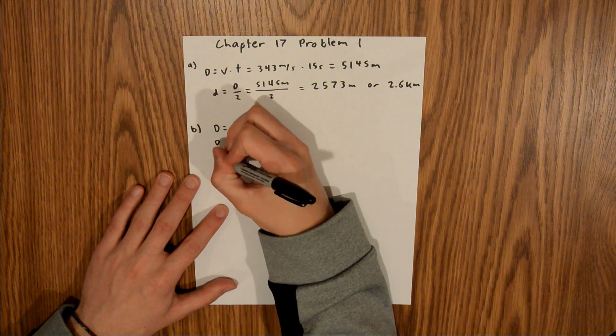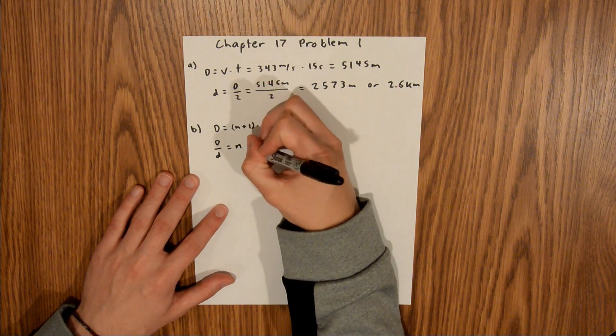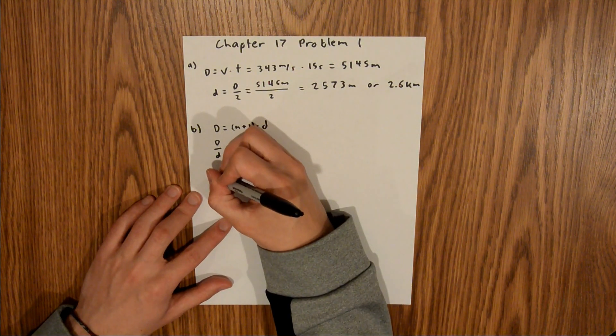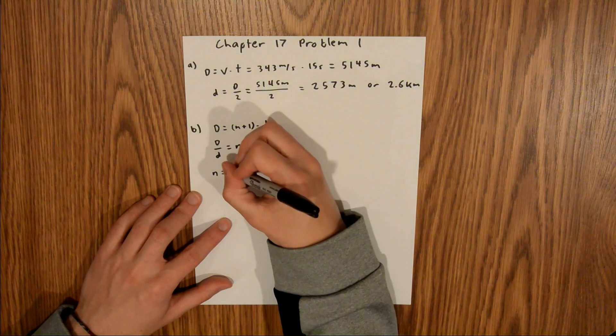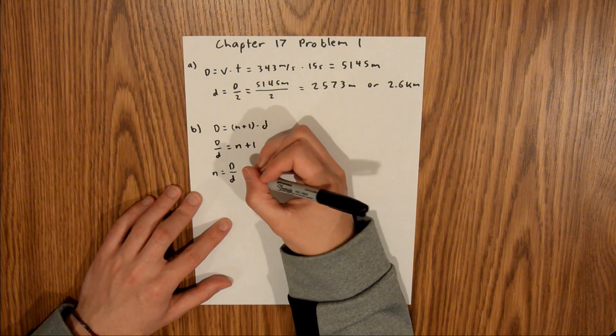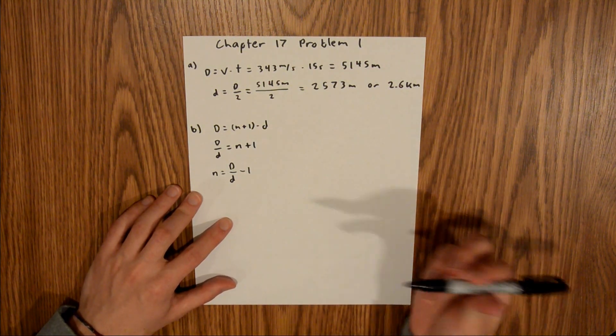We get total distance over distance to the object equals reflections plus 1. Subtracting 1, we find that reflections equals total distance over distance to reflected point minus 1.